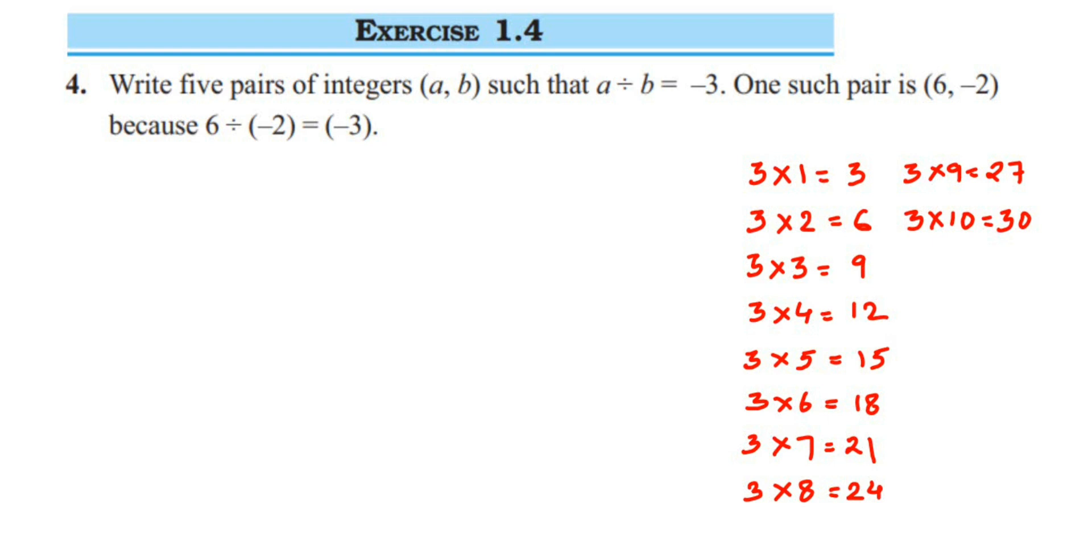Hi everyone, here's a question from Exercise 1.4, question 4. The chapter is Integers of Class 7. The question is: Write five pairs of integers (a, b) such that a divided by b equals minus 3.